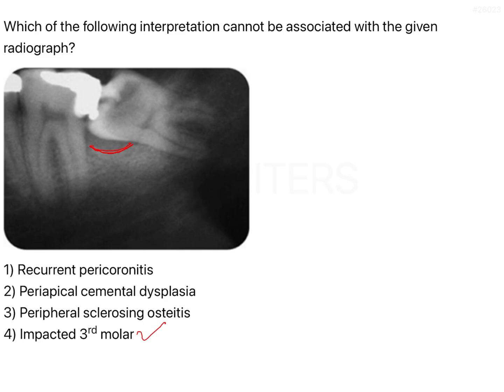An impacted third molar is a correct option. The two most important complaints a patient with an impacted tooth presents with are pain and food lodging. Food lodging occurs because there is a pericoroneal flap — normal oral mucosa — present when the third molar is partially erupted and partially impacted. Food can easily get lodged in that region.